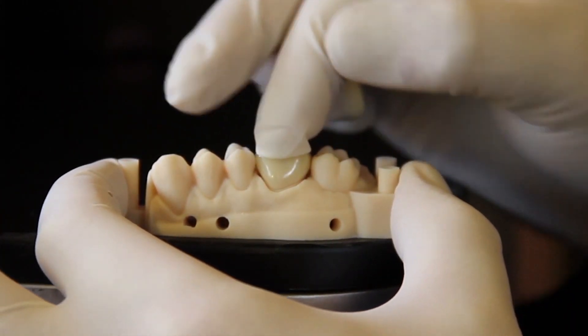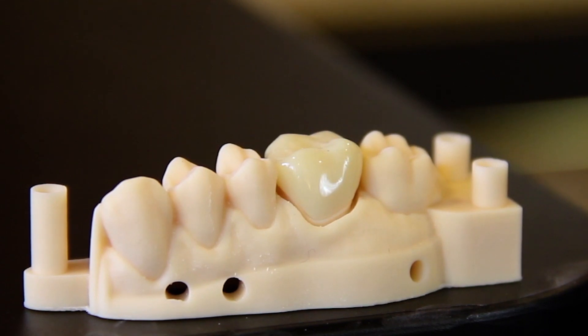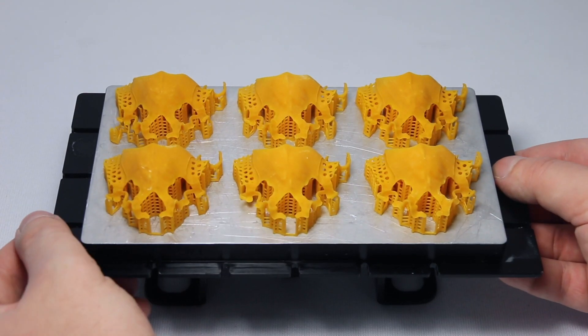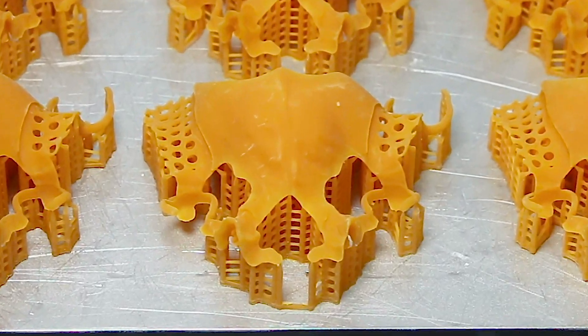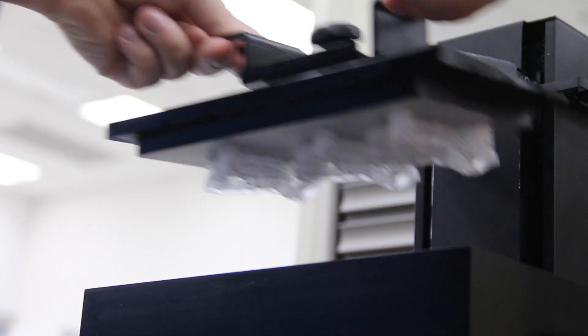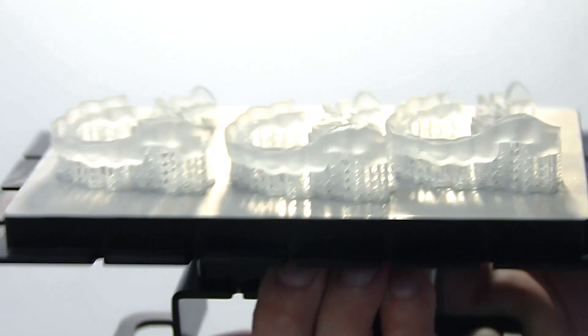18 quads with dyes in 18 minutes, 6 castable partials in less than an hour, as well as indirect bonding trays and surgical guides.